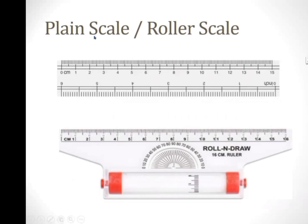We can use a plain scale or a roller scale. On a plain scale, the markings are calibrated in centimeters, whereas the other side is calibrated in inches. We can use this scale to draw straight lines. The other one is a ruler scale, which is used to draw parallel lines and straight lines, with markings given in centimeters.